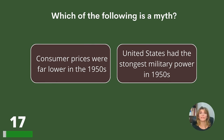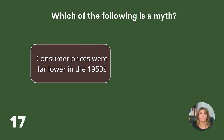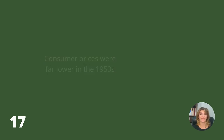Which of the following is a myth? Consumer prices were far lower in the 1950s, or the United States had the strongest military power in the 1950s? Answer: Consumer prices were far lower in the 50s.